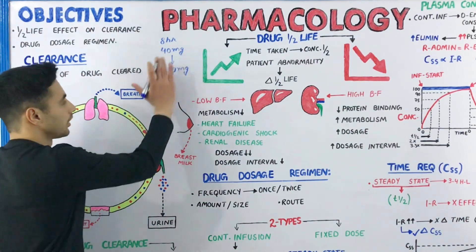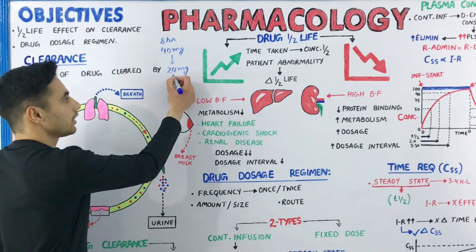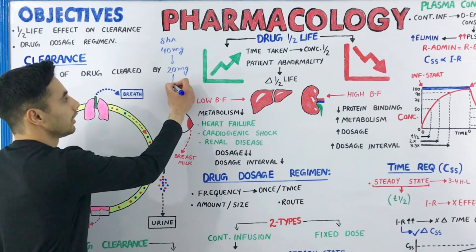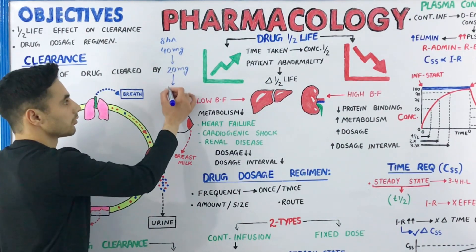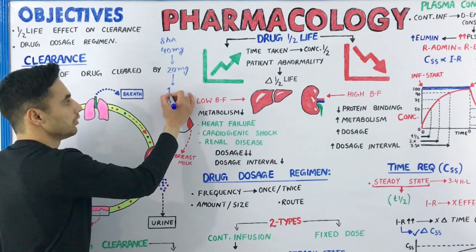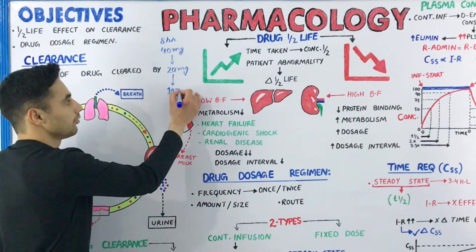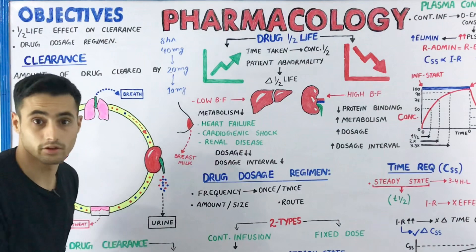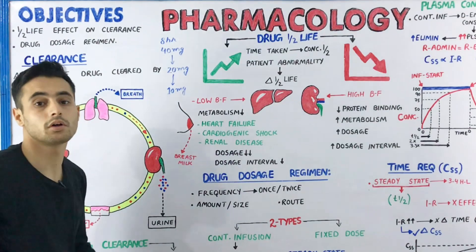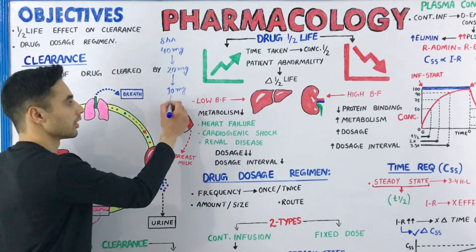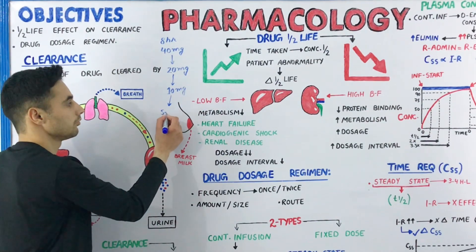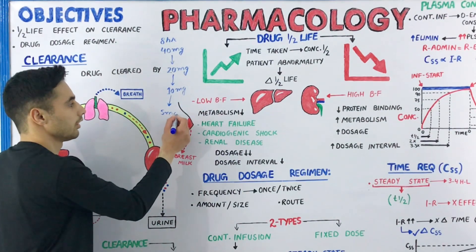After the first half-life, the concentration is 20 mg. After the second half-life (another eight hours), this 20 milligrams is reduced to 10 milligrams. After the third half-life (another eight hours), the 10 milligrams is reduced to 5 milligrams. This is what the half-life is.